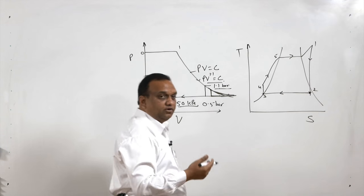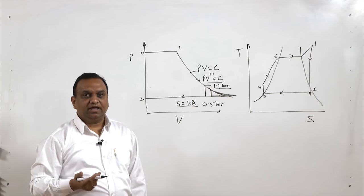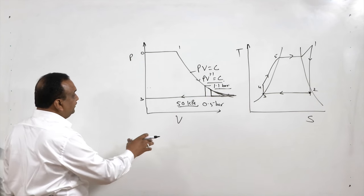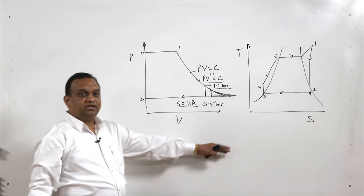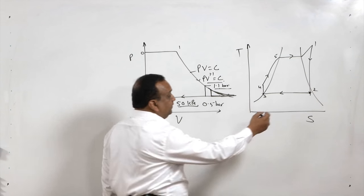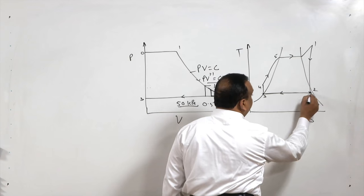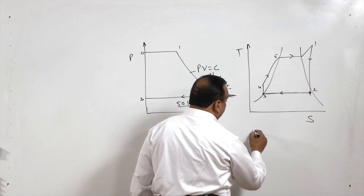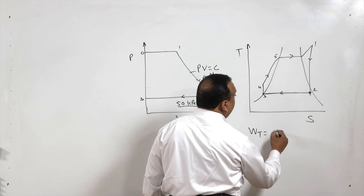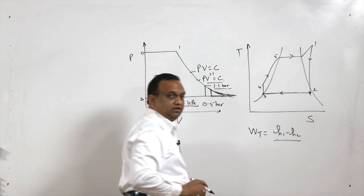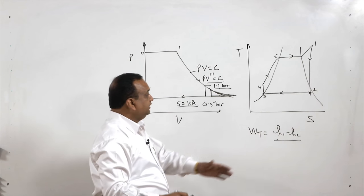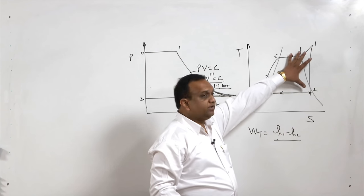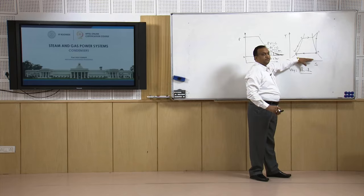However, in the case of a steam turbine — which is a rotary machine used for high power generation — if we maintain vacuum in the condenser, more power can be generated because the work of the turbine is h1 minus h2. As we keep decreasing the pressure in the condenser, we get more power, but the issue is to what extent we can reduce the pressure.